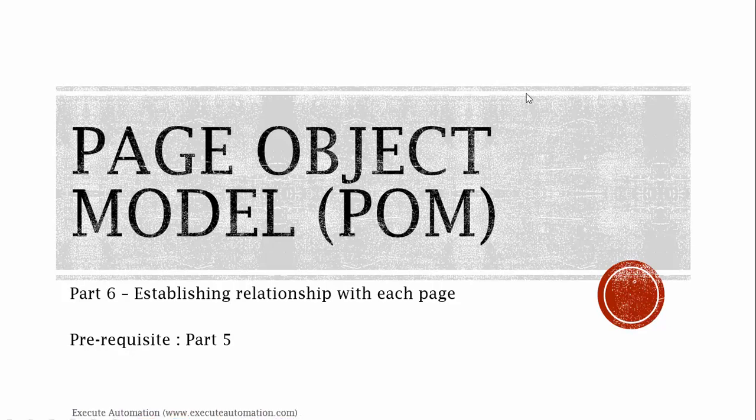Hey, hello guys, this is Karthik from executeautomation.com. This is part 6 of our framework design and development video series. In this part we're going to talk about establishing a relationship with each page. So far from part 5 we were discussing about page object models, their usage, and how we can create objects in separate class files and call them in test methods or main methods of our Java class file.